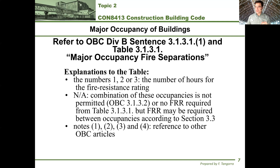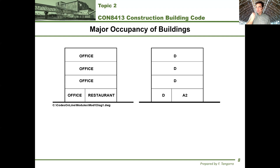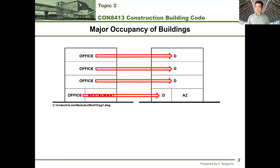As of right now, you're ready to try question number 2 in homework set 1 — give that a try. You'll find the homework in the same location on Brightspace where you found these course notes. Now, before we wrap up, I want to talk about how I was able to determine that office is a D occupancy and restaurant is an A2 occupancy.